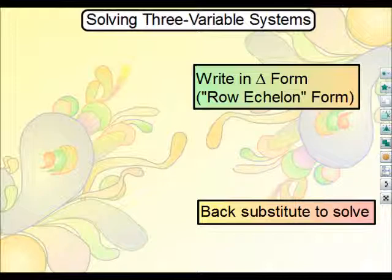After you've done that, what you'll want to do is you'll want to back substitute in order to solve the system. Basically what it is is that you're trying to figure out the one point that all three planes intersect at.